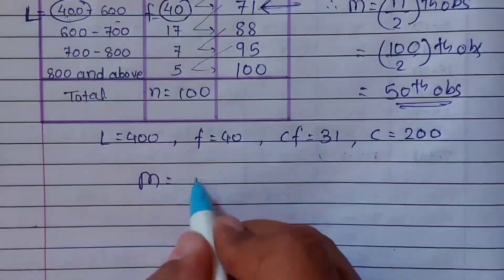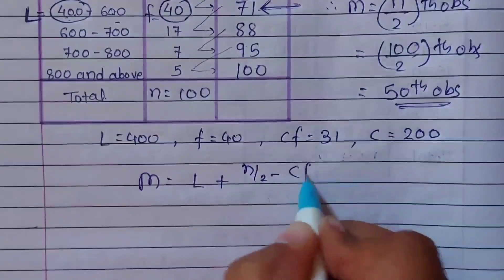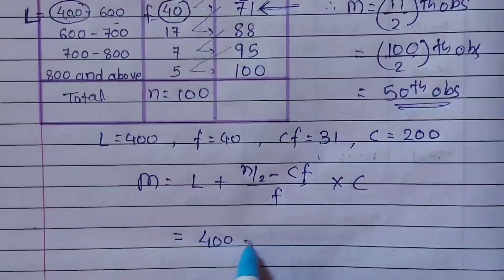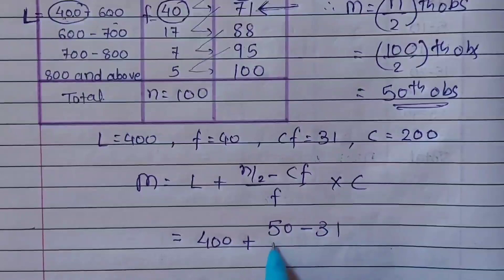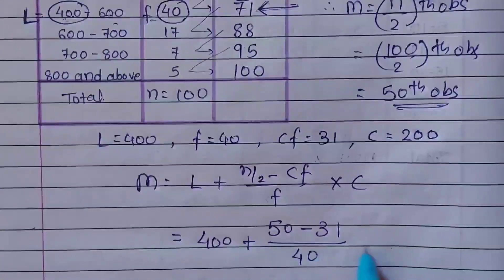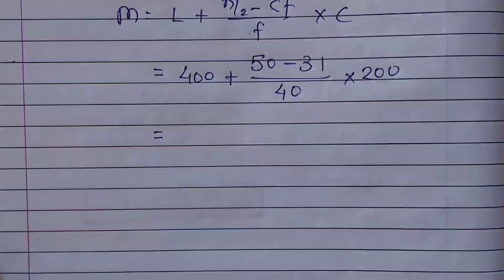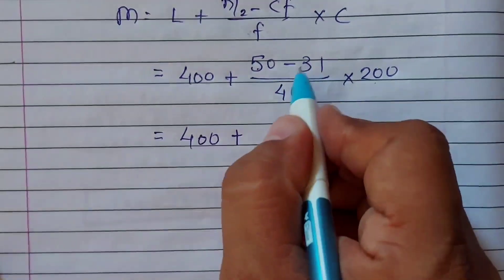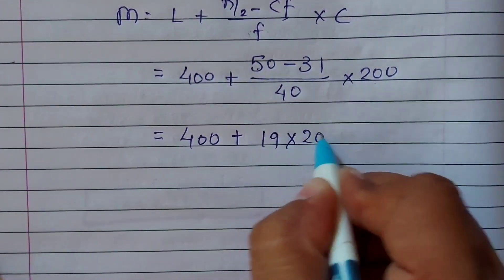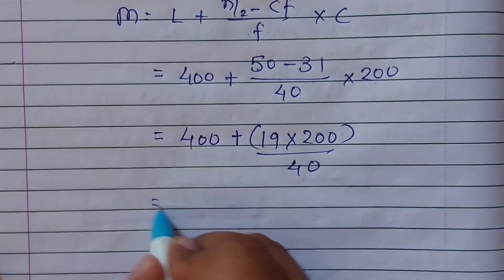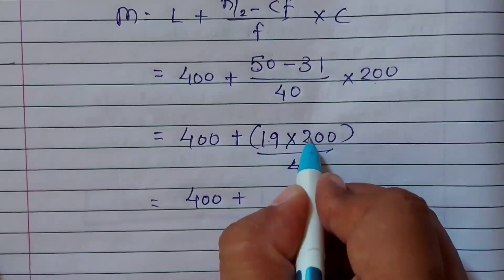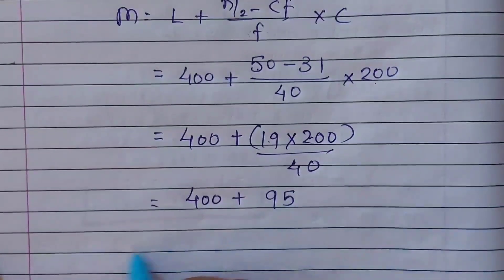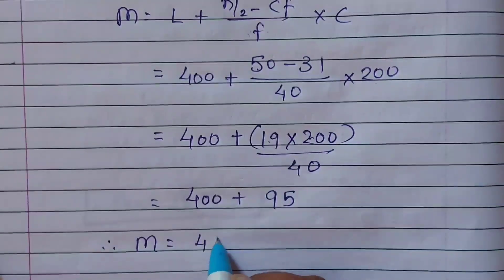Now applying the median formula: Median = L + [(N/2 − CF) / F] × C. The value of L = 400, N/2 = 50, CF = 31, F = 40, C = 200. So: 400 + [(50 − 31) / 40] × 200 = 400 + [19 / 40] × 200 = 400 + 19 × 5 = 400 + 95 = 495. Therefore our median is 495.